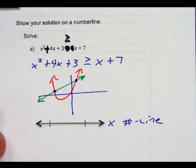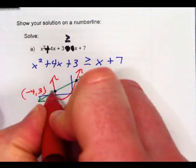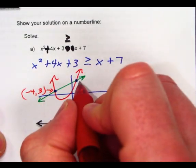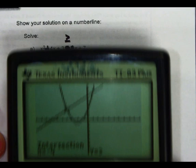So one point is negative 4, 3. That's this one over here, that point right there. And then this intersection point, I can also find that on my calculator.